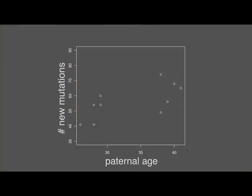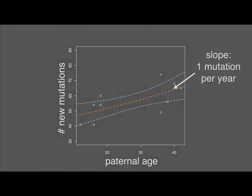We determined germline mutation rates genome-wide and in different regions of the genome. The total burden of mutations in one's offspring can be explained by the father's age. The effect is clear, but it's subtle. Older fathers don't cause autism — they simply have a higher risk of having a child with the disorder.